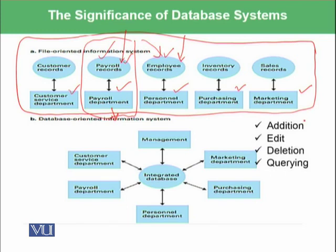If we want to add another employee, we need to add it in both places. Similarly, if any employee has left the company, that record needs to be deleted from this file and from that file. And if we want to perform a query — for example, give me the list of all employees named Ali who live in Islamabad and are given XYZ salary — we need to query this file, then that file, and then merge all the results.